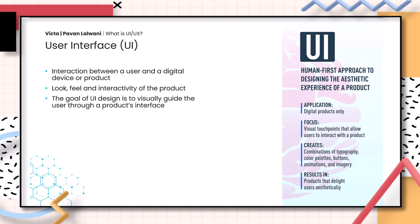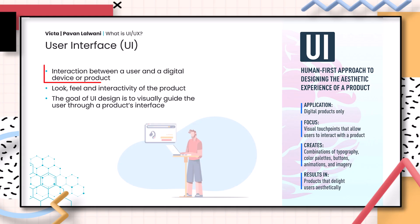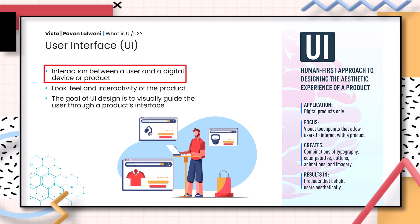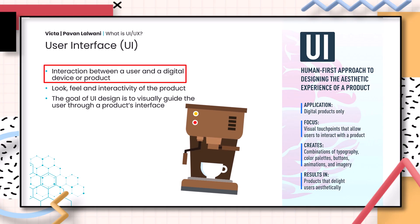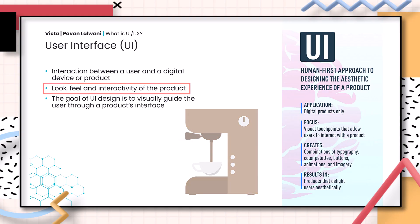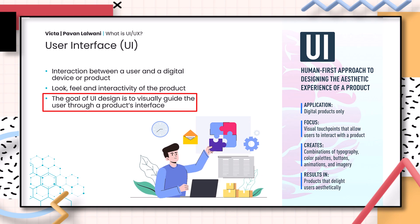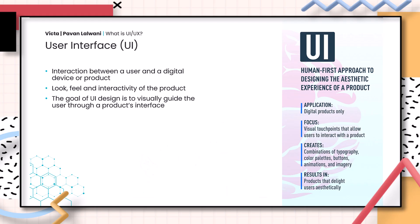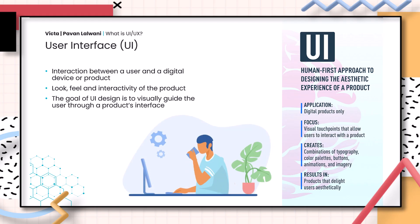If we dive into both of these individually, user interface design, UI, is the interaction between a user and a digital device or product, like your coffee machine at work. The look, view, and interactivity of this product is also UI. So if you want to pick out a cup of coffee from your coffee machine, you don't need to think about which one you want — it's really easy and simple to use. The goal of UI design is to visually guide the user through a product's interface, so we just want to pick our cup of coffee and start our day.